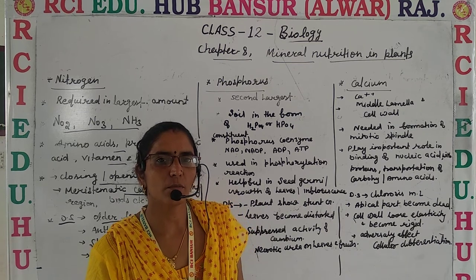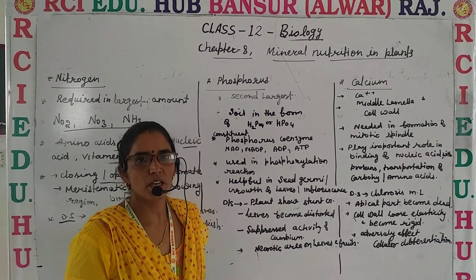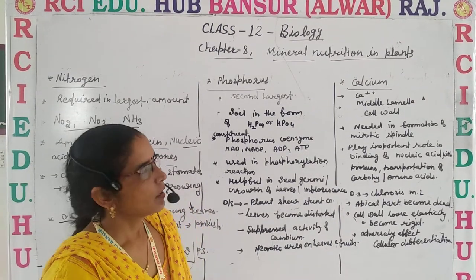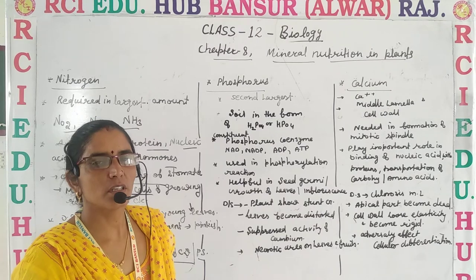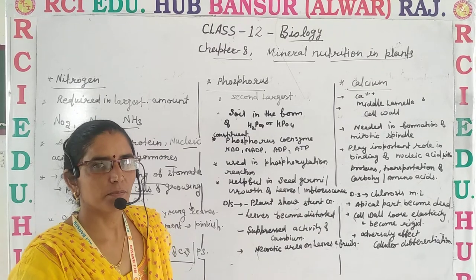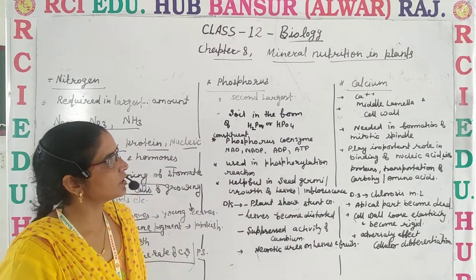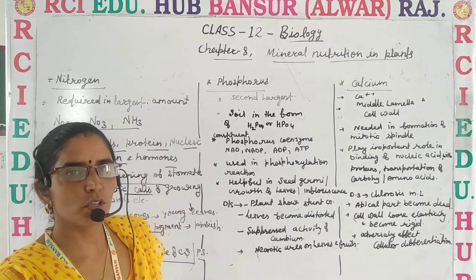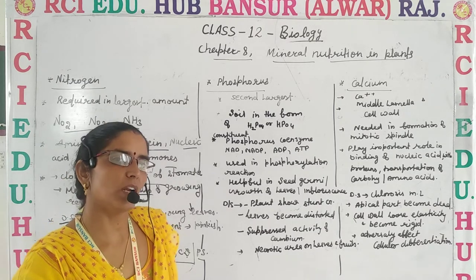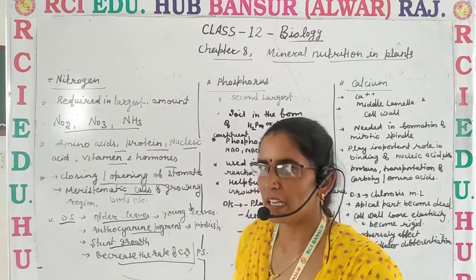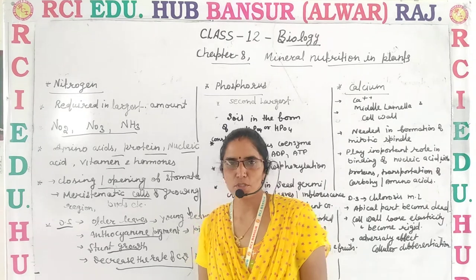Friends, good morning. Welcome to another online class of RCI Education Hub Bansur. Let's continue class 12, chapter number 8, Mineral Nutrition in Plants. Today let's discuss about the three main nutrients — Nitrogen, Phosphorus, and Calcium — which are required by the plants for their good growth. First, let's start from Nitrogen.